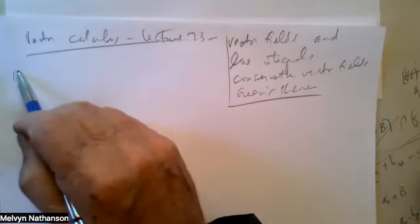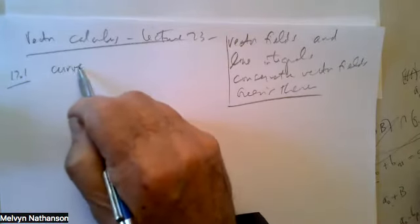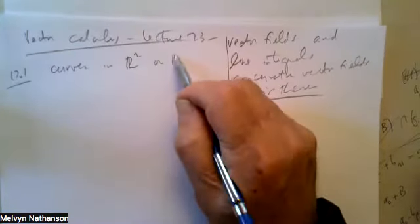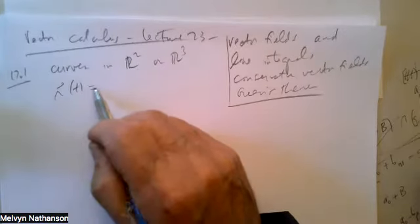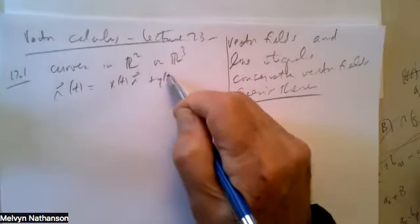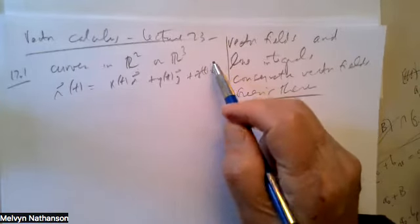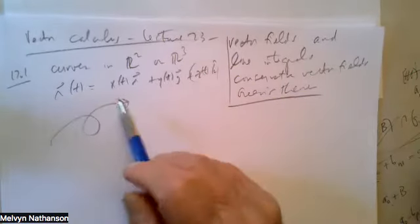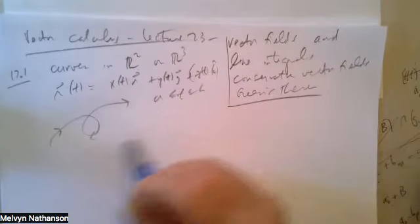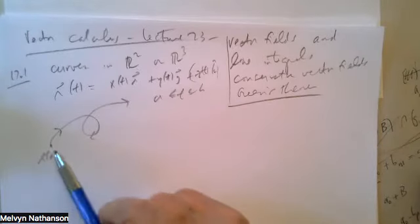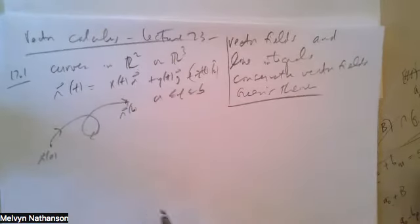Going back to Section 17.1 on vector fields: we've looked at curves in R2 or R3 — two-dimensional or three-dimensional space. A curve is usually written as R of T, with an X component and a Y component in two dimensions, and a third Z of T component in three dimensions. We can think of a curve as moving in space where T goes between A and B. Here is R of A, and as time increases, you move along the curve until you reach R of B at time B.